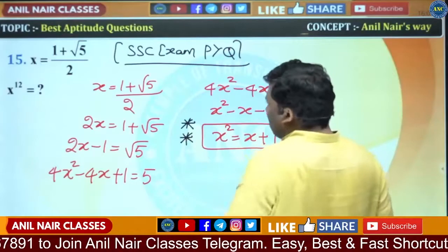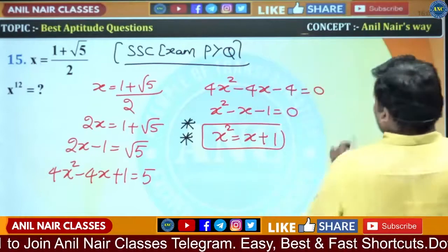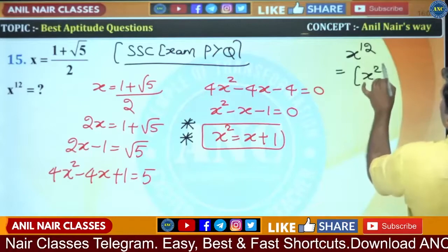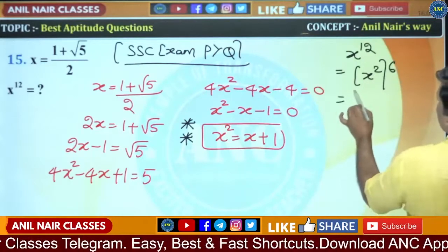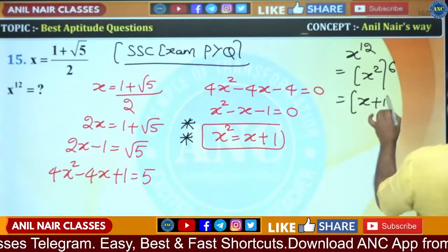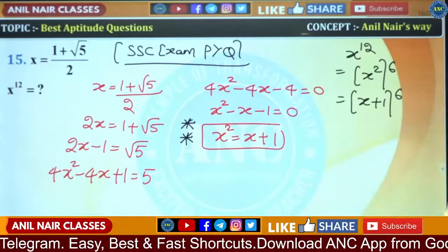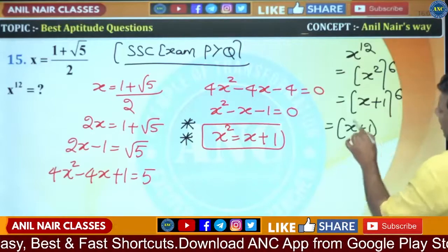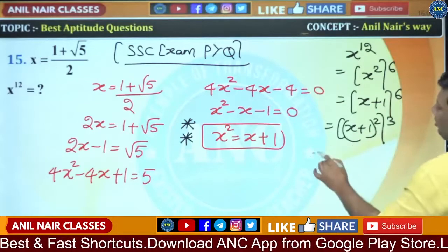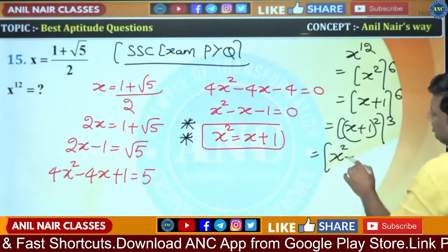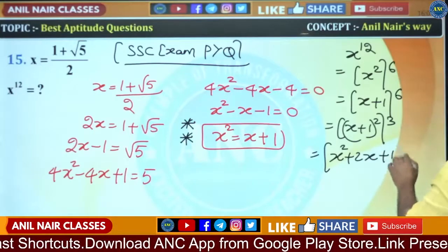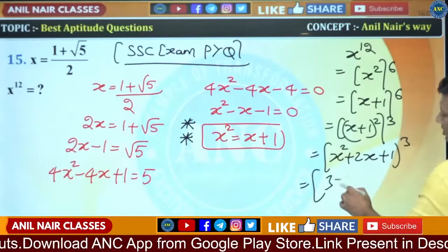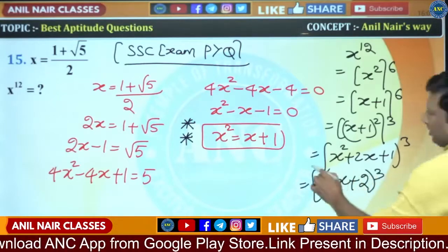X² = X + 1. So X^12 = (X+1)^6. This can be written as (X+1)² whole cubed, which is (X² + 2X + 1)³. Since X² = X + 1, substituting gives (X + 1 + 2X + 1)³ = (3X + 2)³.